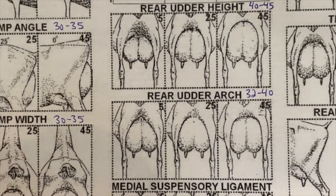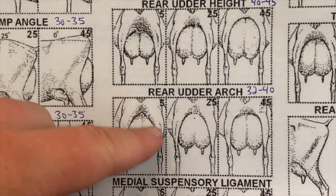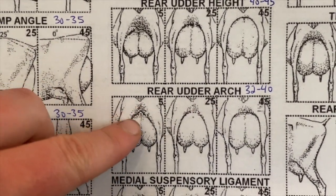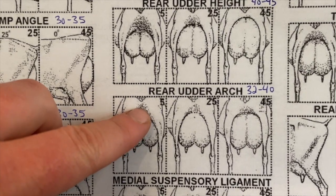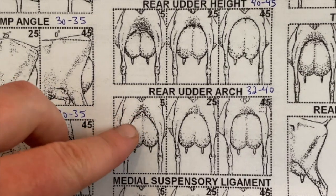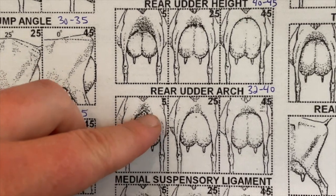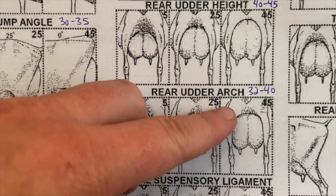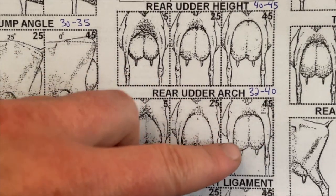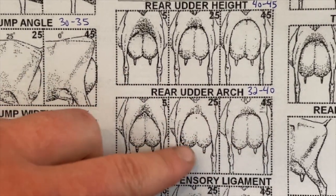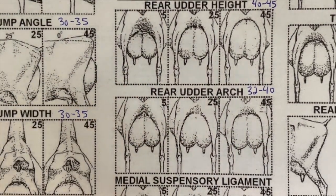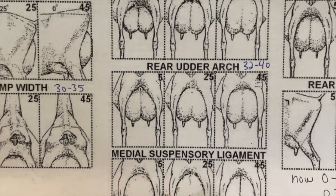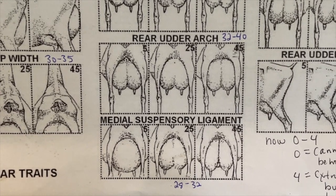For udder arch — this has to do with the shape of the rear udder, which looks almost like an upside-down heart. At a score of 5 there's almost no arch, just a triangular point. At 25 there's a nice medium-sized arch, and at 45 there's a full U-shape with a big arch. We're looking for a score of about 32 to 40.